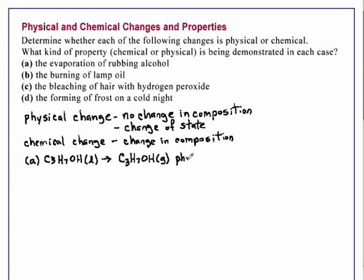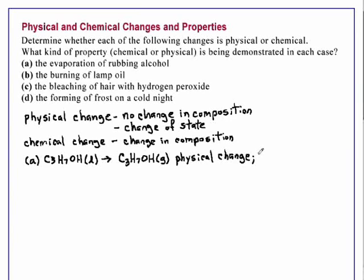The only thing that has changed is its state — it's now a gas. So this is a physical change. Now, what is the property that goes along with this change? Evaporation is related to the concept of volatility. If something is volatile, we say it evaporates readily. So we'll say that the change is a physical change, and we'll call the property volatility.